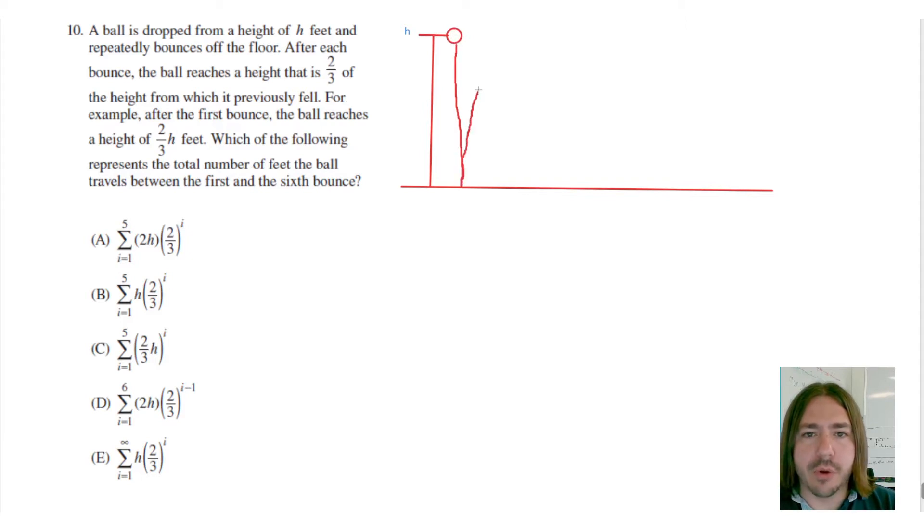Then it's going to come back up, but only two-thirds of the original way, right? And then it's going to bounce again and come up two-thirds of the original way. So if I'm keeping track of the bounces here, I'm just freehanding this with a mouse, so forgive the sloppiness. I'm going to keep track of each bounce, because I only care about everything that's happening between the first and the sixth bounce.